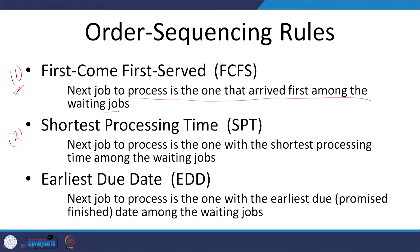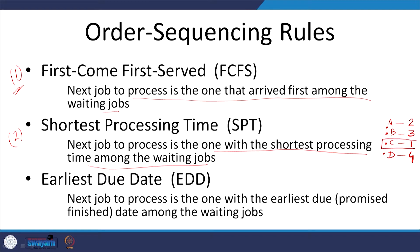The second case is shortest processing time. The next job to be processed is the one with the shortest processing time among the waiting jobs. For example, there are 4 jobs A, B, C, D with different processing time requirements: 2 minutes, 3 minutes, 1 minute, 4 minutes. So the next job to be processed will be job C first, because it has the shortest processing time. That is another way of deciding the sequence of operations.